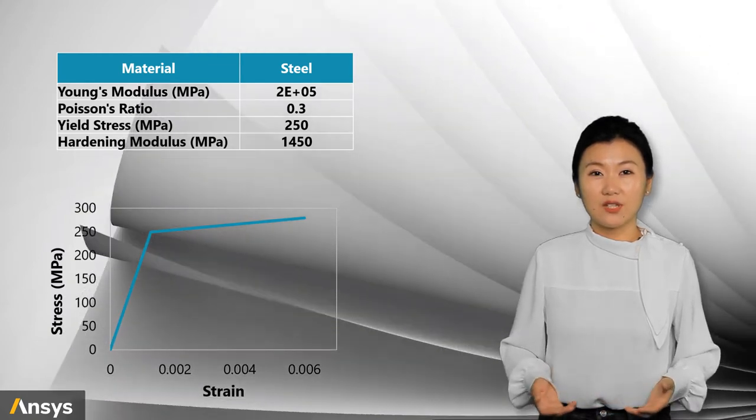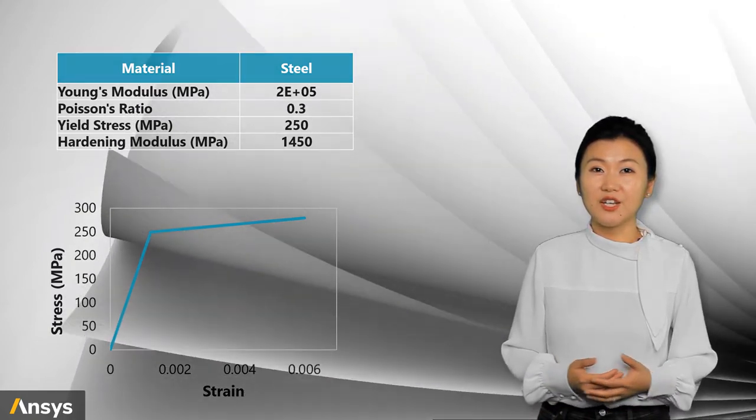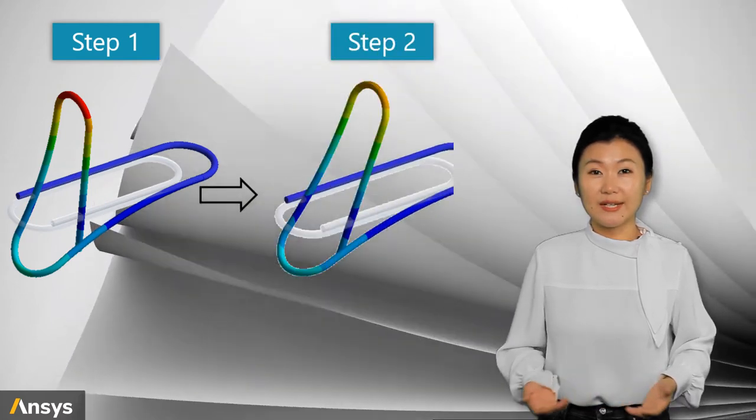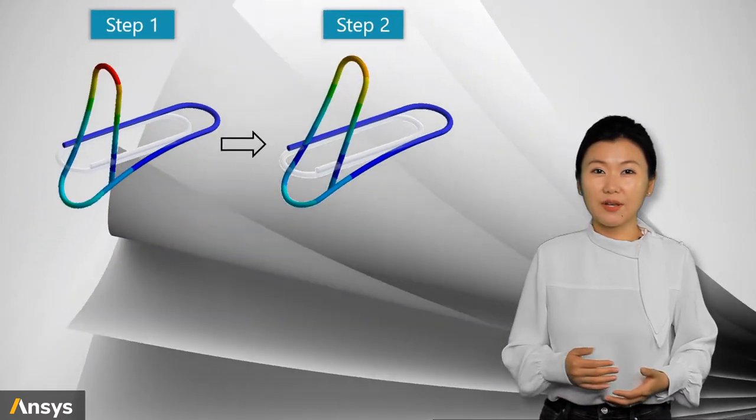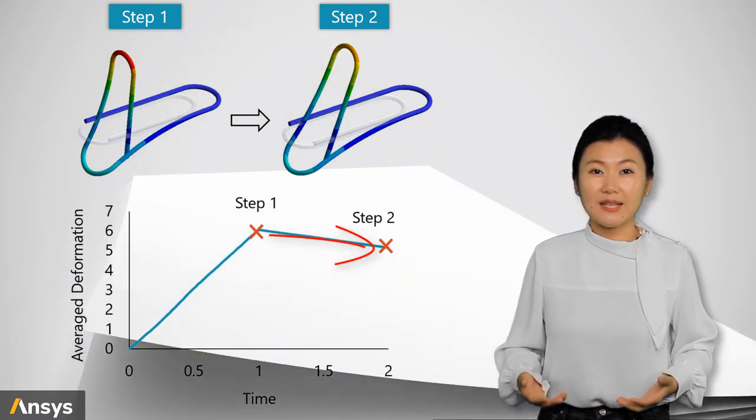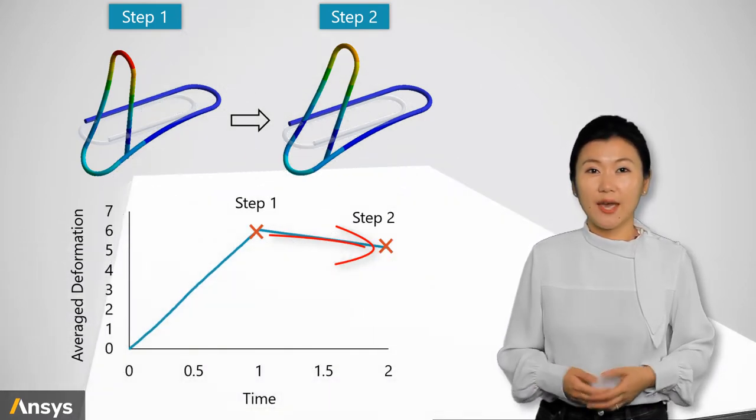The hardening of the steel material is isotropic bilinear hardening. From the results, we can see that the paper clip deforms a lot in the first step. After the displacement control is released, the deformation returns by a small amount.